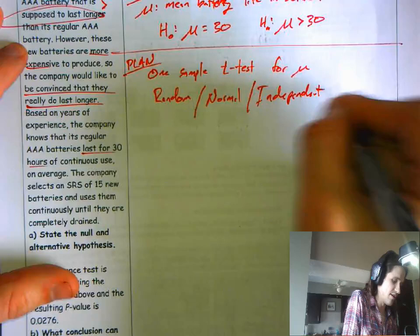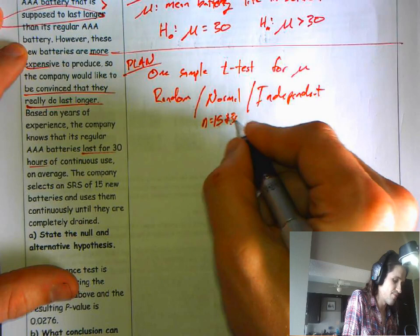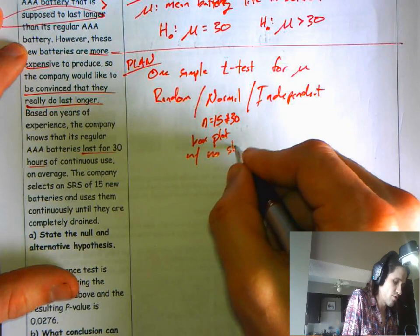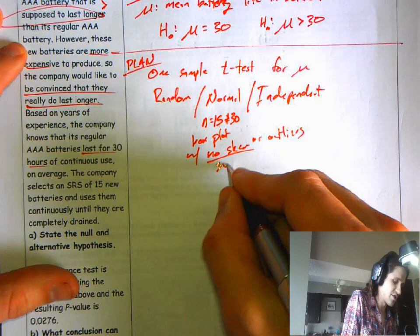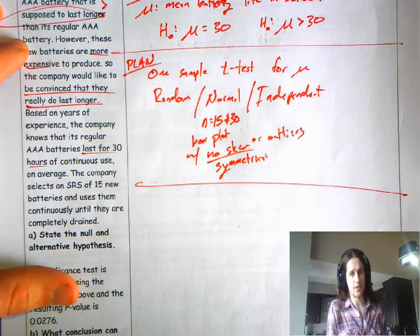Here you might notice that your n is 15, which is not more than 30. So you would need a box plot with no skew or outliers. What do you call no skew? You call it symmetrical. But we don't have any of that data, so we can't actually check that. So we have to assume that the plan step works.